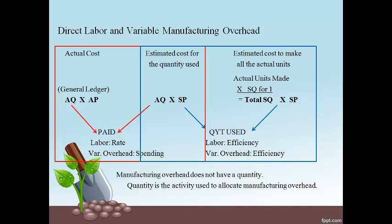Manufacturing overhead does not have a quantity in the traditional sense. The quantity is the activity used to allocate overhead. For instance, if overhead is allocated using direct labor hours, then the quantity of direct labor hours is used for the quantity.